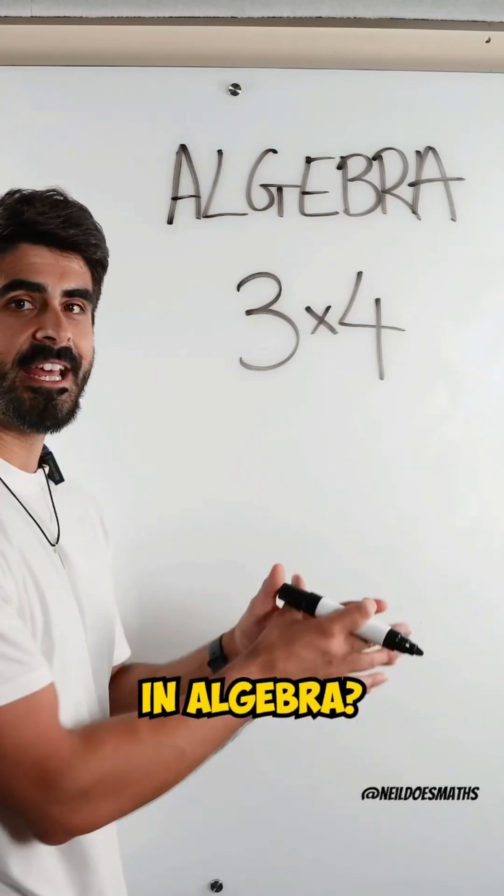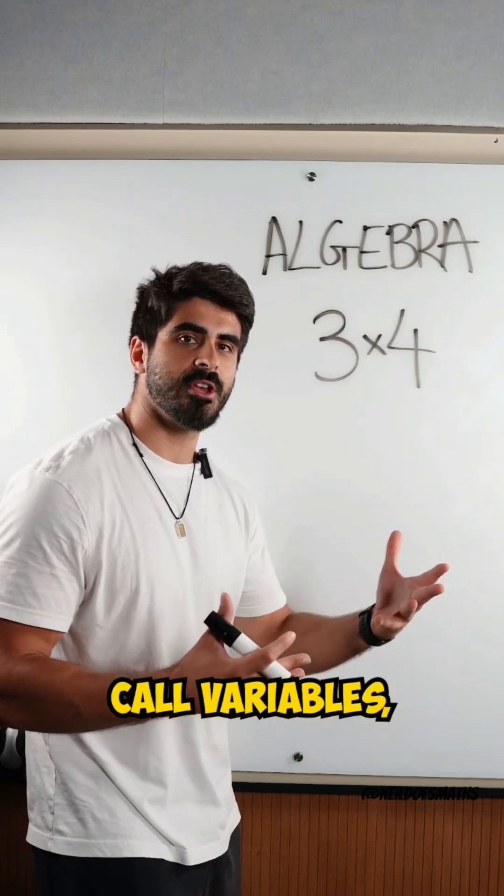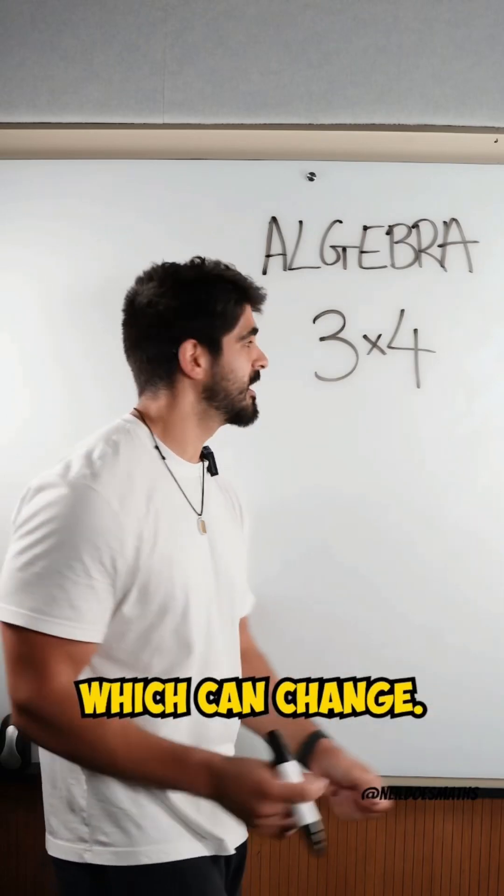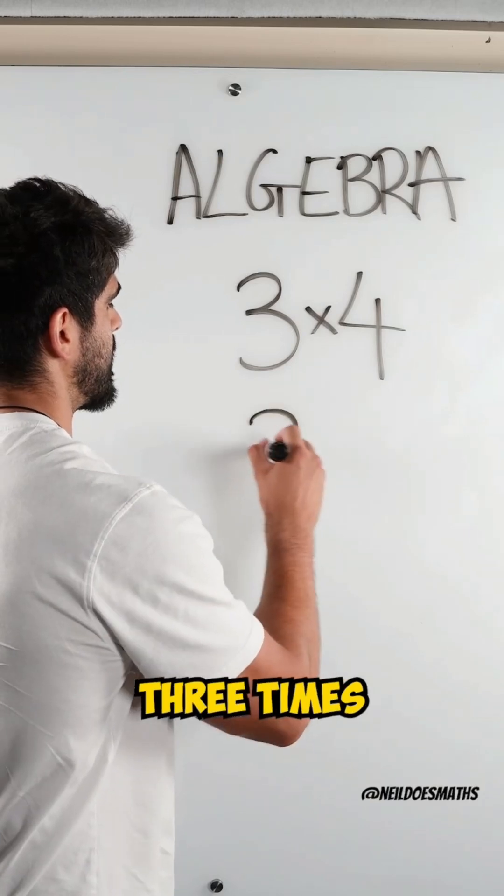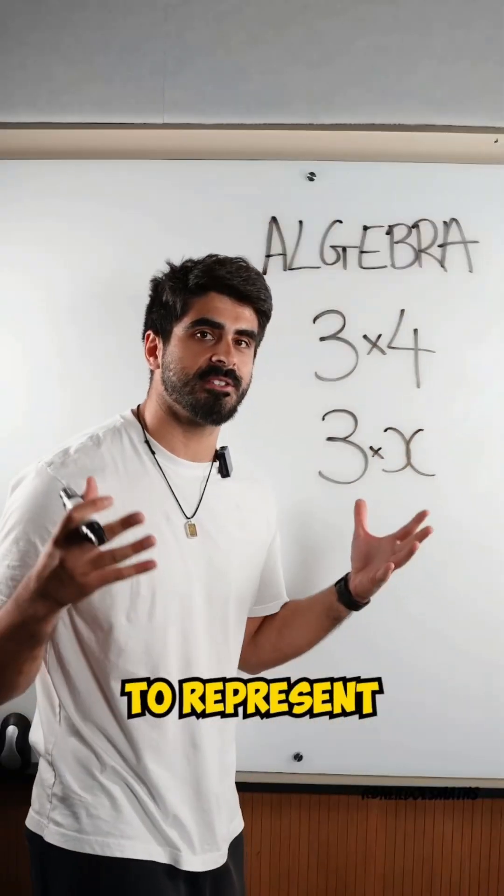Now what do we do in algebra? We start introducing letters. Letters that we call variables, which represent numbers which are variable, which can change. Here we would say 3 times x, for example. We most of the time like to use x to represent an unknown.